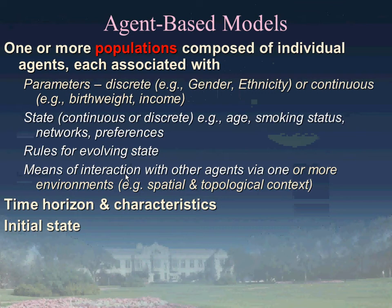In an aggregate system dynamics model, we would be dealing with something like income deciles or income quartiles—we don't have the luxury of distinguishing people by their precise income. In an agent-based model, we can. It's just a property of that agent stored as a double precision value rather than as a category.